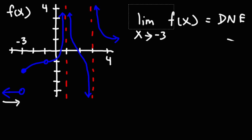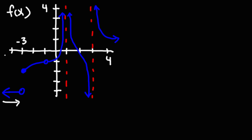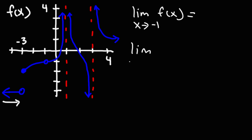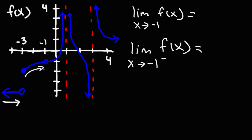Let's look at another example. Let's find the limit as x approaches negative 1. Does the limit exist or does it not exist? Well, let's check the one-sided limits first. Let's see what happens as we approach negative 1 from the left side. So here's negative 1. As we follow the curve from the left side, it gives us a y value of negative 1.